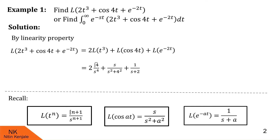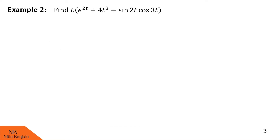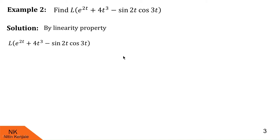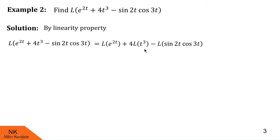I hope you understood this example. Now let us proceed to the second one. Here we are asked to find Laplace of e^(2t) + 4t³ − sin2t·cos3t. By linearity property, we can write this as Laplace of e^(2t) + 4 times Laplace of t³ − Laplace of sin2t·cos3t. Laplace of e^(2t) and Laplace of t³ can be directly obtained using direct formulas, but Laplace of sin2t·cos3t cannot be obtained directly because we do not have a direct formula for Laplace of sin(at)·cos(bt).